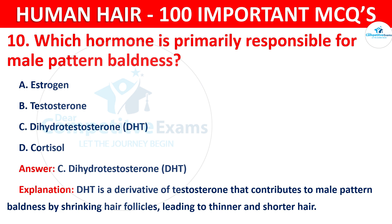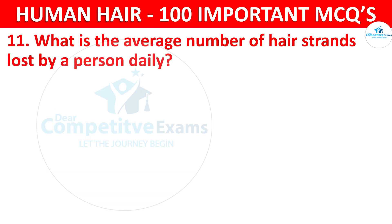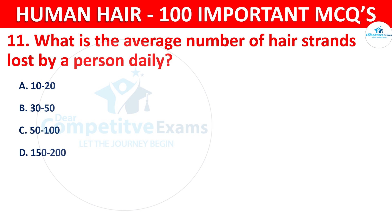Question number 11. What is the average number of hair strands lost by a person daily? The options are 10 to 20, 30 to 50, 50 to 100, or 150 to 200.